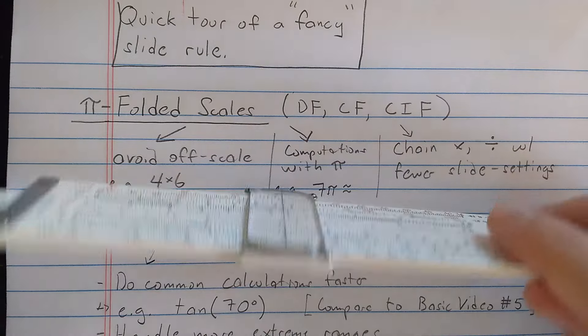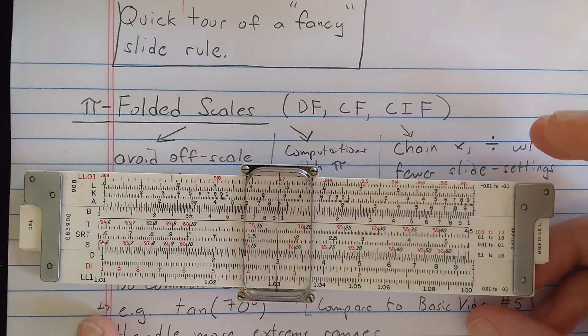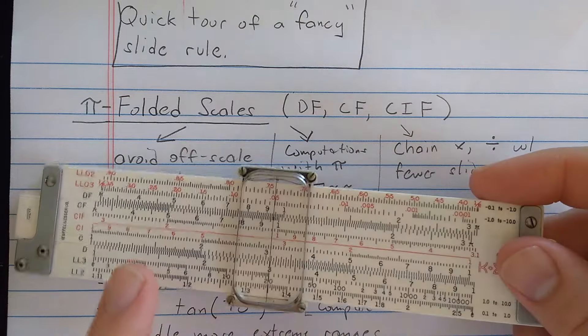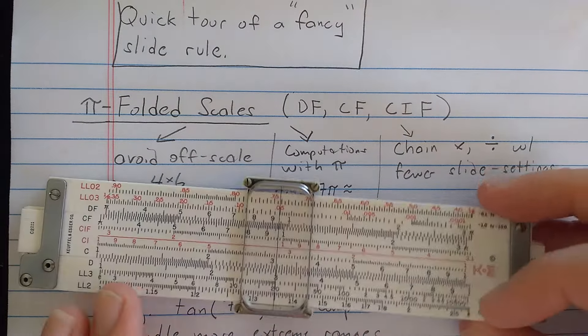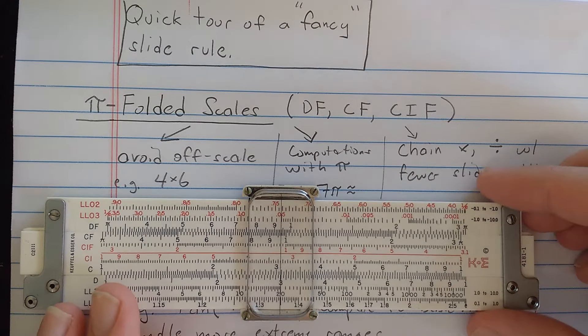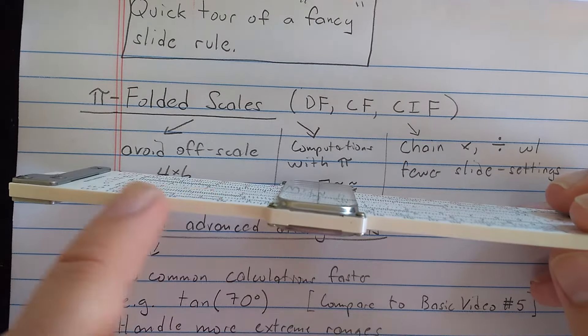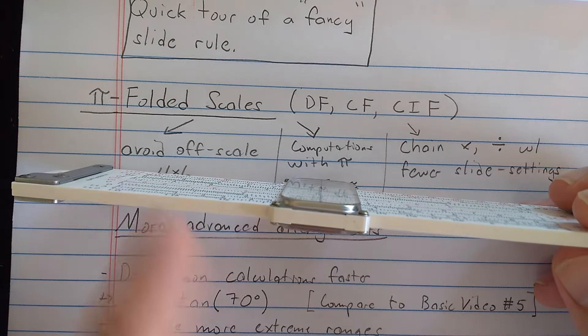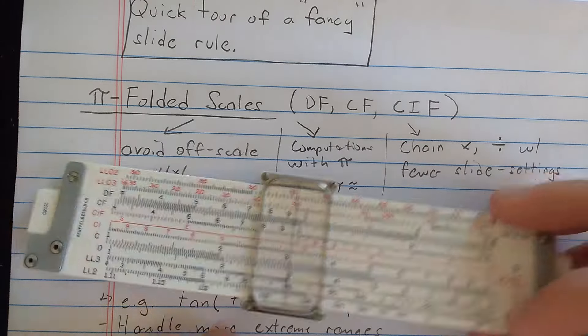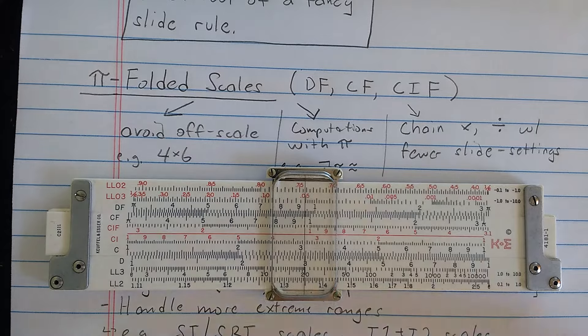This is a plastic rule with metal end braces, it's a duplex rule, which means it has full complement of scales on both sides and cursor which reads on both sides. There is also a version of this rule which is celluloid over wood, I think it's mahogany, and you will see the celluloid over wood or bamboo on a lot of slide rules from the 50s and 60s.